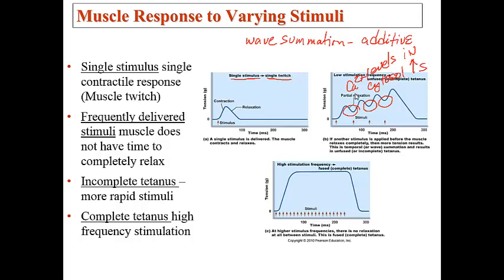In reality, muscle twitches occur sequentially and are additive, resulting in a smooth muscle contraction rather than a jerky one. Complete tetanus is what we should see in a healthy muscle — smooth, titanic muscle contractions as shown in letter C. Letter B, incomplete tetanus, is abnormal. Weak or involuntary contractions are often due to fatigue rather than neuromuscular disease, but it's always good to consult a doctor.